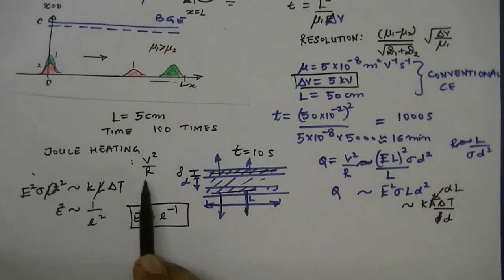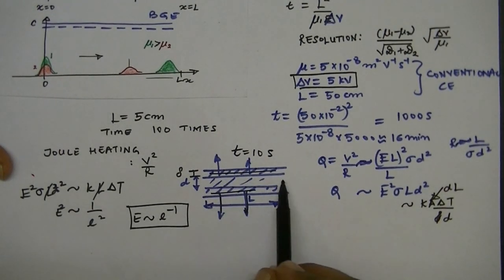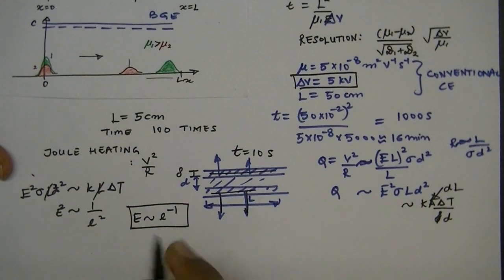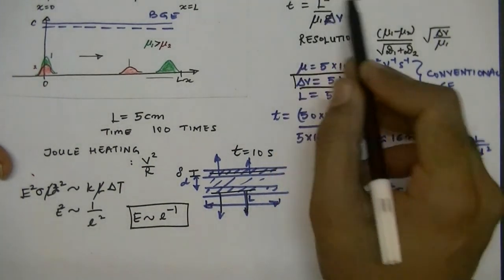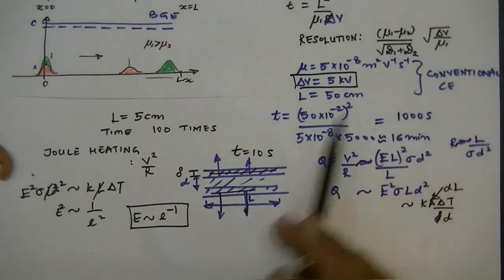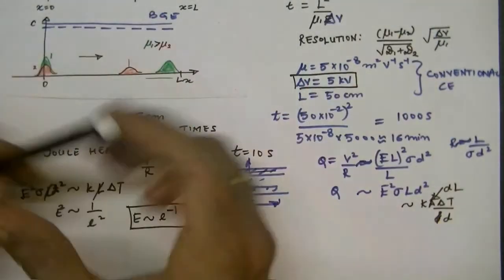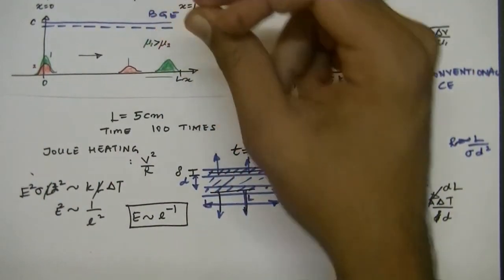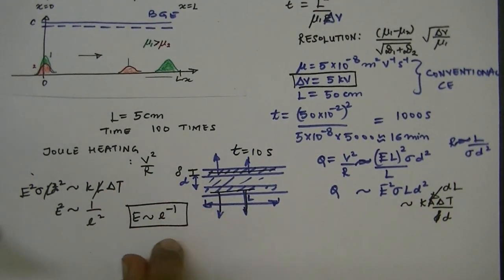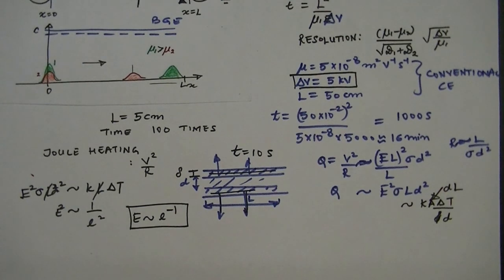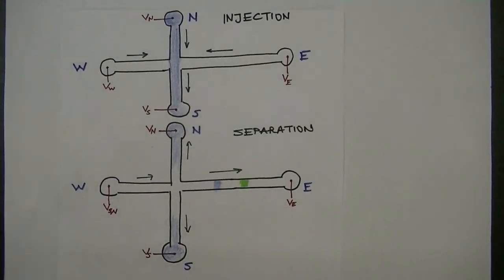This means that if you want to maintain the same temperature difference between the electrolyte in the capillary and the surroundings, shrinking the channel diameter allows you to apply a higher electric field. Applying a higher electric field leads to a smaller time of analysis and even better resolution. So reducing the length reduces time, and reducing the diameter allows higher electric field due to efficient heat transfer — both improve electrophoresis performance.